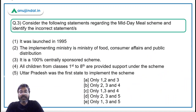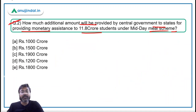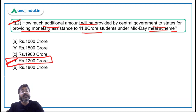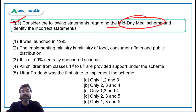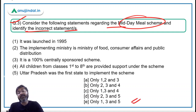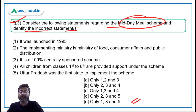Coming back to Question 2: the correct answer is option D — Rs. 1,200 crores will be provided by the central government to states and UTs for monetary assistance to students under the Midday Meal Scheme. For Question 3, you have to identify the incorrect statement. This type of question has appeared frequently in RBI and NABARD exams, so we can expect it.